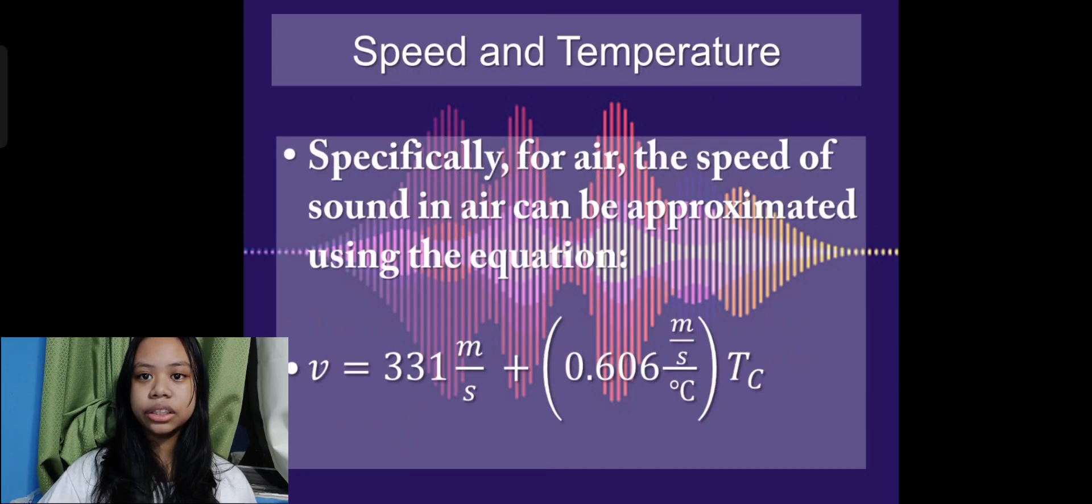Specifically for air, the speed of sound is equal to 331 meters per second plus 0.606 meters per second per degrees Celsius times temperature of the air in degrees Celsius. This stems from the fact that for 1 degree Celsius rise in the temperature, the speed of air increases by 0.606 meters per second.